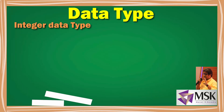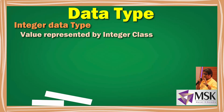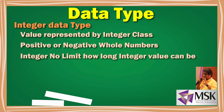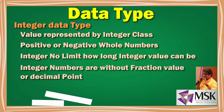For numeric types, integers are values represented by the integer class. They can be positive or negative whole numbers. In Python there is no limit to how long an integer value can be. These are numbers without fraction values or decimal points — they are whole numbers.